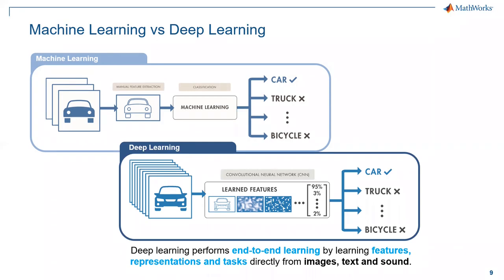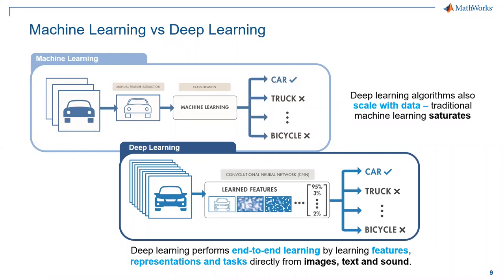Another differentiator between the two is that machine learning tends to saturate, whereas deep learning continues to scale with data. Often with machine learning, you can only throw so much data at the problem and you're not going to get a better solution. Whereas with deep learning, typically you can continue to give it new data and improve your model.